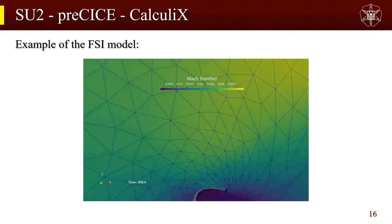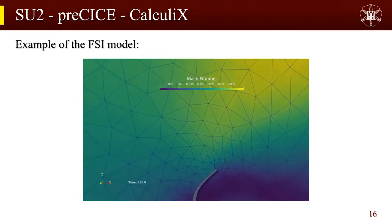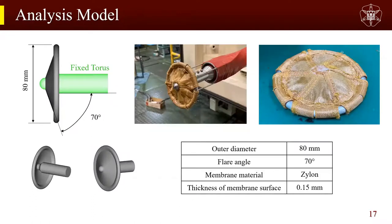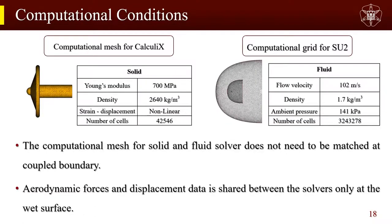This is the model for our analysis. The outer diameter of the aeroshell is 80 millimeters and the flare angle is 70 degrees. The material is woven fabric with high-strength and flame-retardant Zylon fiber, and the outer ring is a solid aluminum ring. Aerodynamic forces and displacement data are shared between the solvers only at the wet surface.